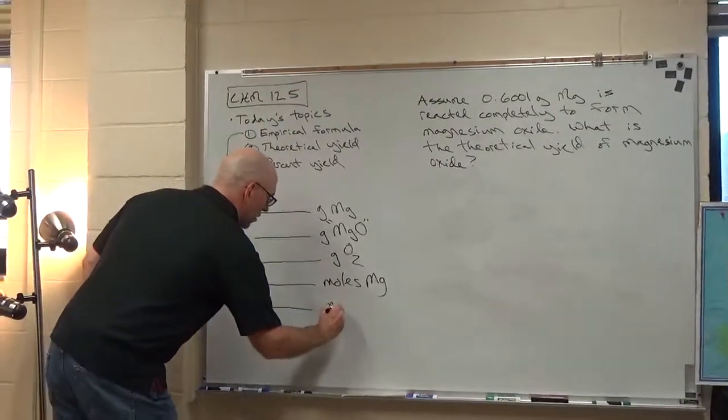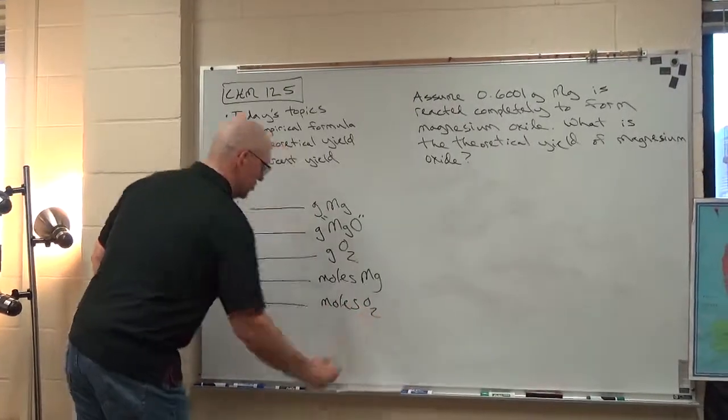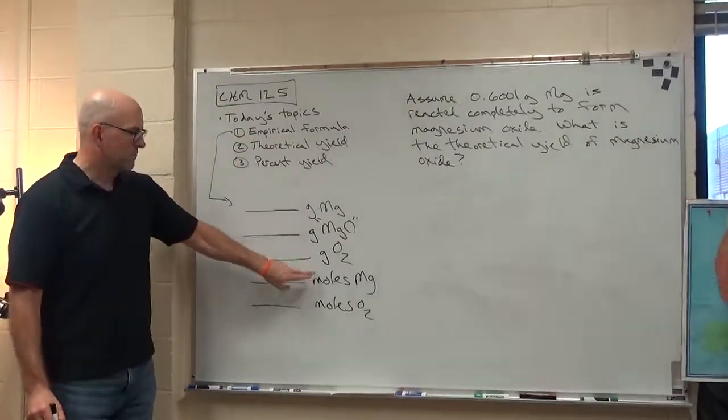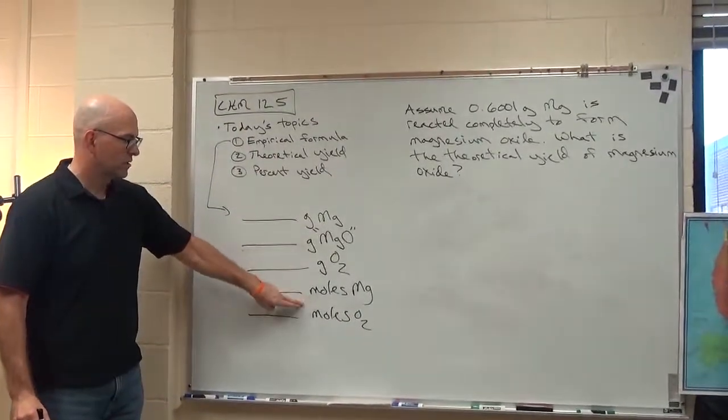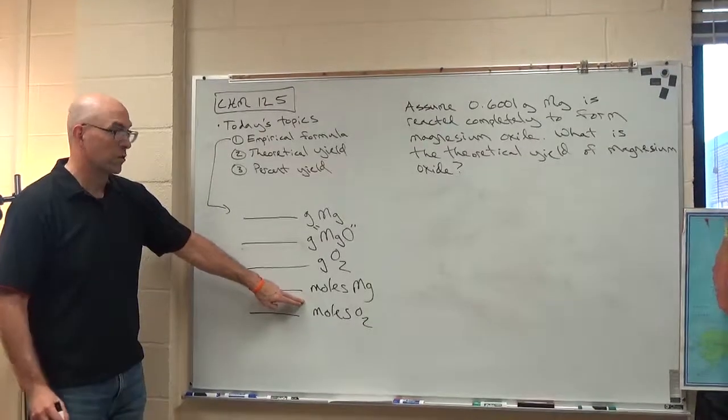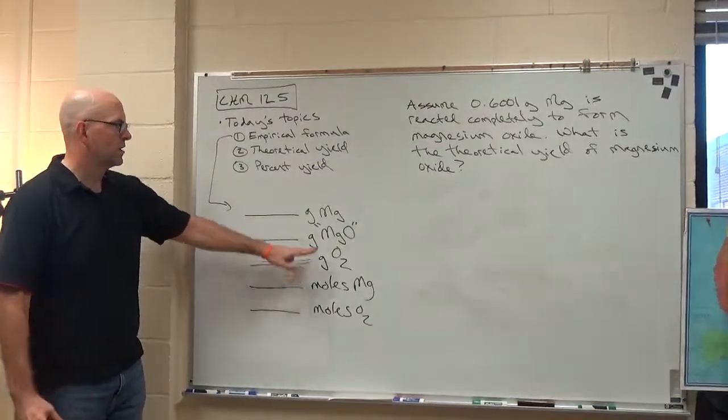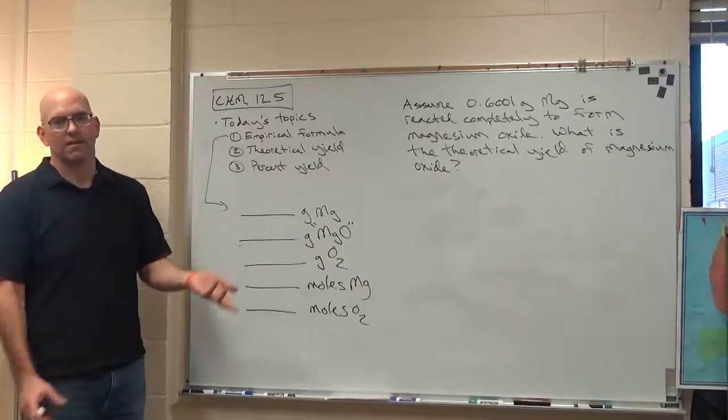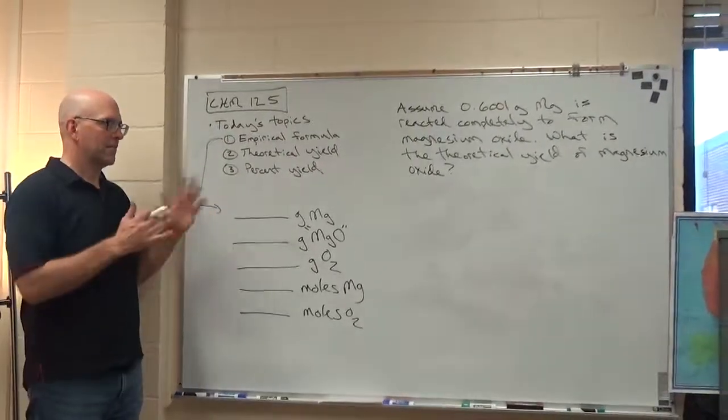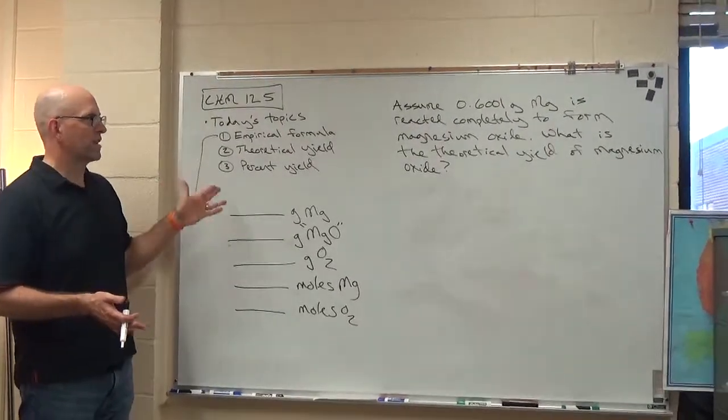You'll get your moles of O2, and then you'll use the mole information to determine the simplest whole number mole ratio that makes up magnesium oxide. And that's the empirical formula. So it's a pretty straightforward lab. I don't think you'll have any trouble.